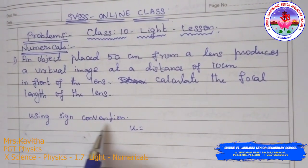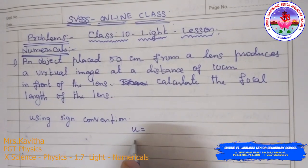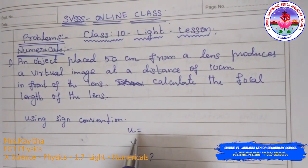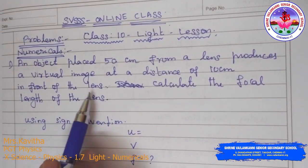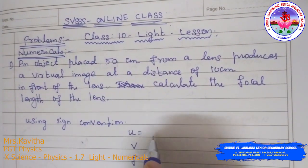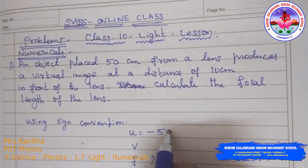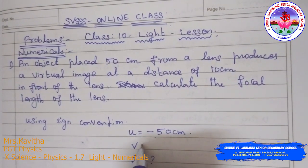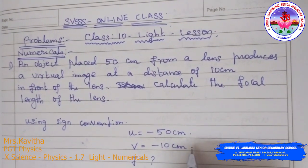Now using sign convention, we need to find U, V, and F. What is the value of U? They have given the clue 'in front of the lens', that is the left side of the lens — so U = −50 cm. V is also in front of the lens, so V = −10 cm, the image is to the left.